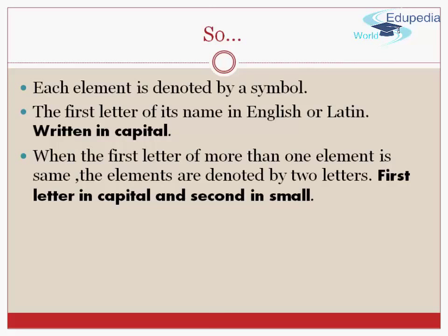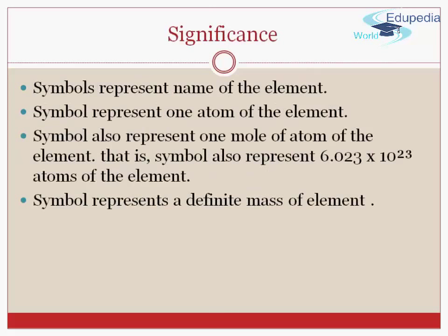So friends, why do we keep symbols? What is the significance of the symbols in the chemical world? Let's understand now the significance of the symbol as the symbol represents the name of the element. For example, symbol C represents carbon element. Second, symbol represents one atom of the element.